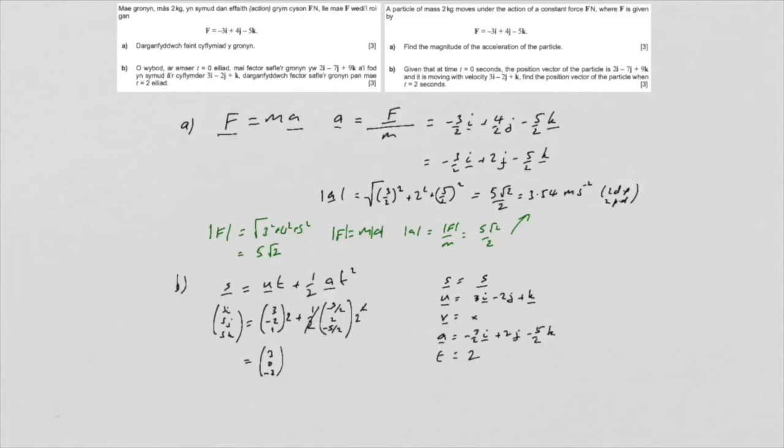And so the final position of the particle, which I'm going to call R. I might write some words, but I'm keeping these bilingual. So R would be the starting position, which was 2 minus 7, 9, plus the displacement, 3, 0, minus 3, which gives me 5 minus 7, 6. And it's fine to leave it as that, but you could, if you wanted, you could then write 5i minus 7j plus 6k.